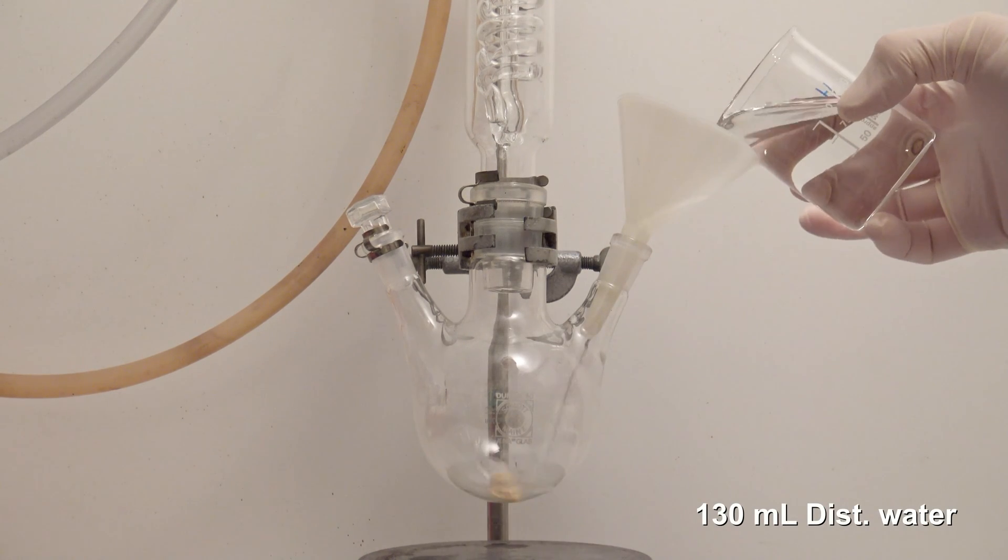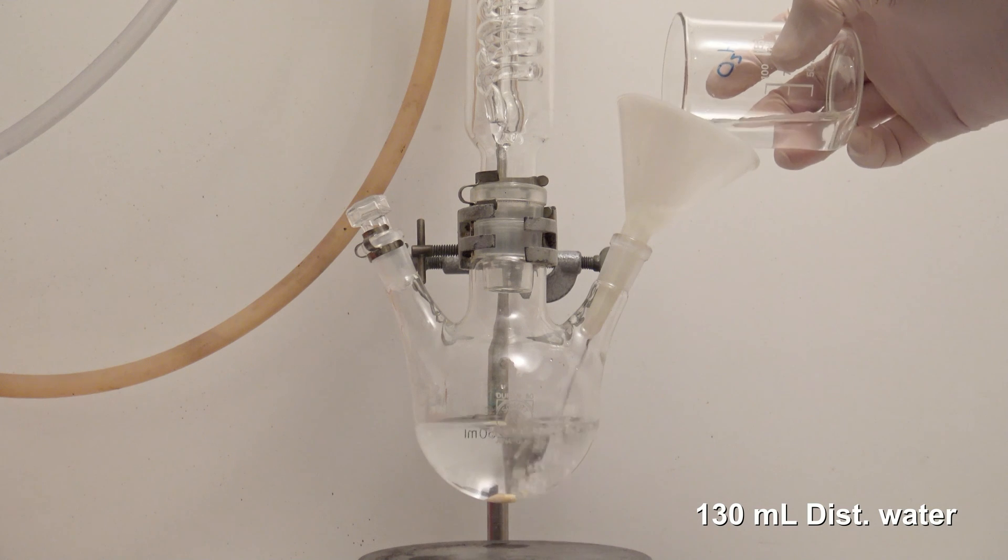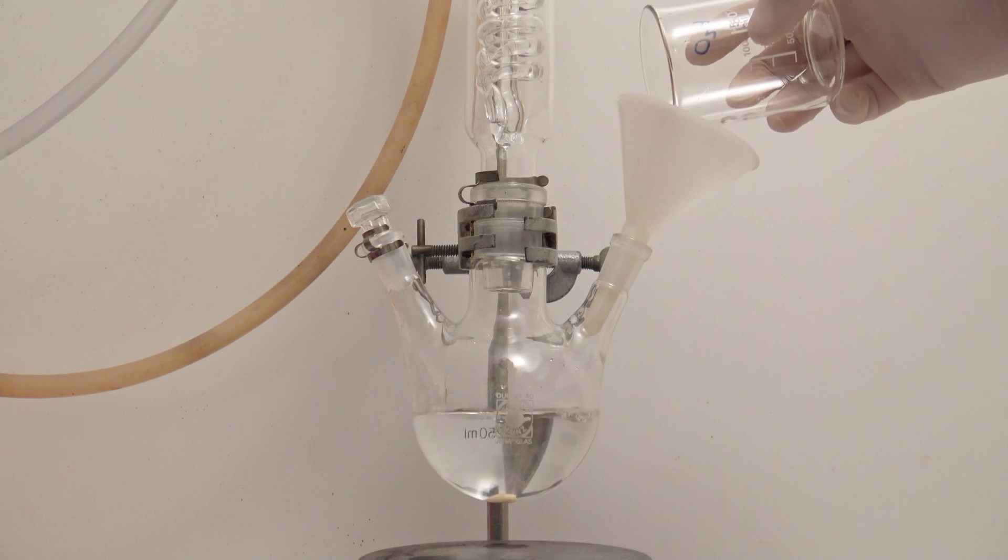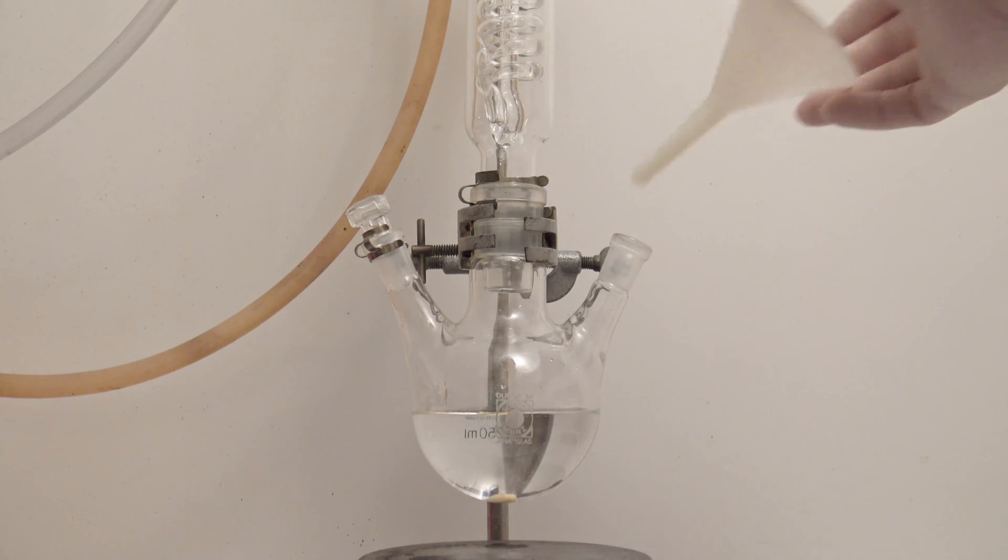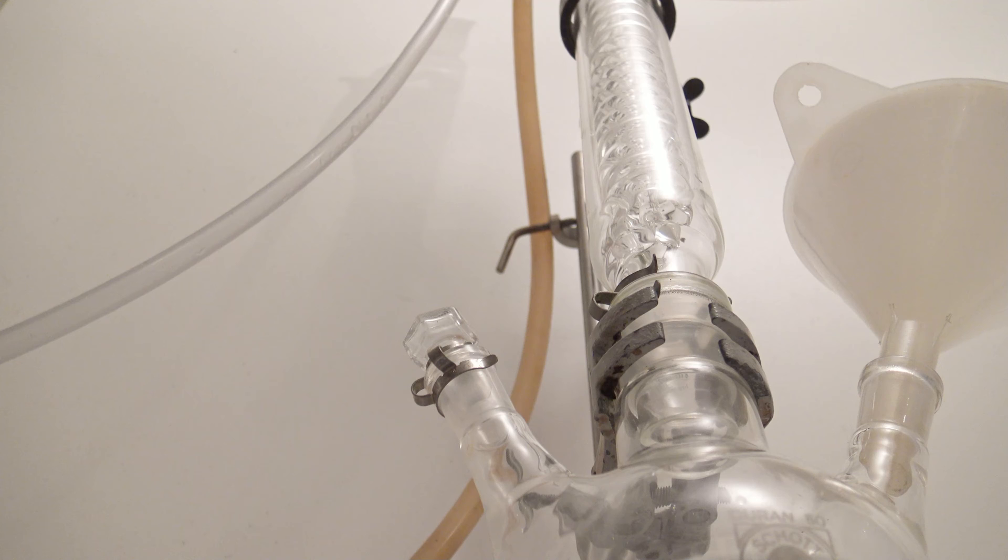First, 130 ml of distilled water were added to the flask. Before the next step, the pump for the cooling water was turned on to make sure that vapors could condense if needed.